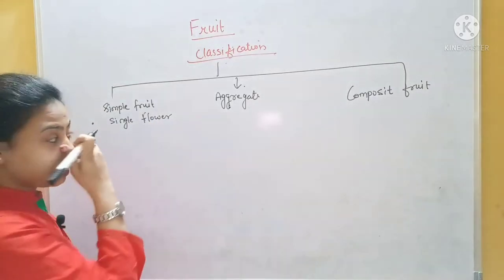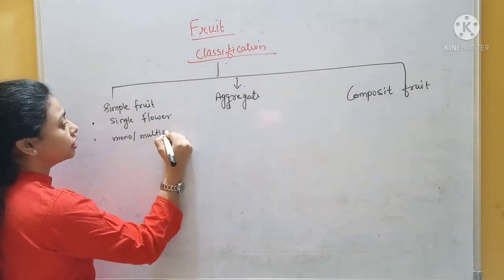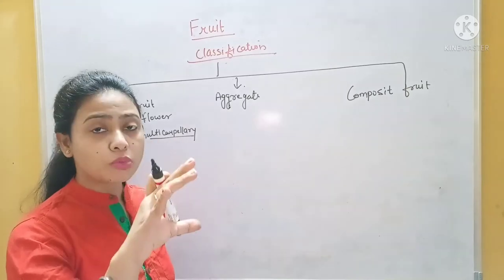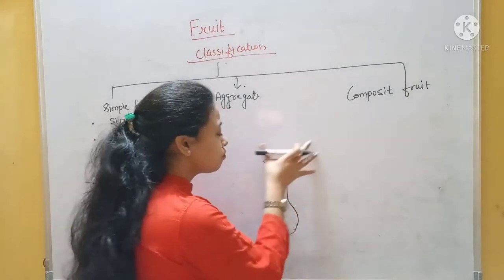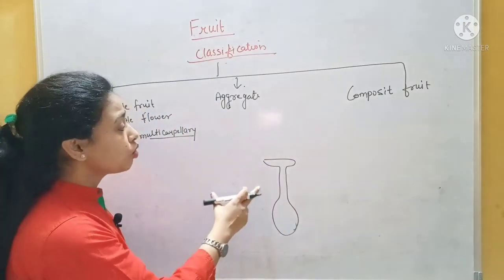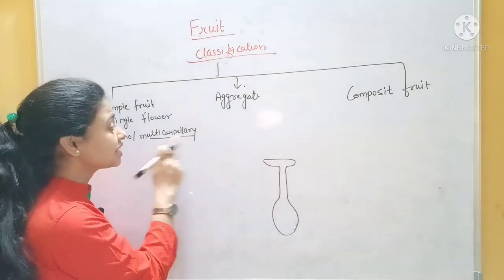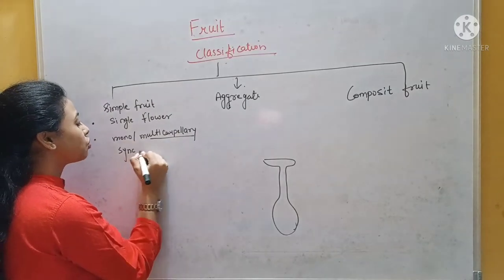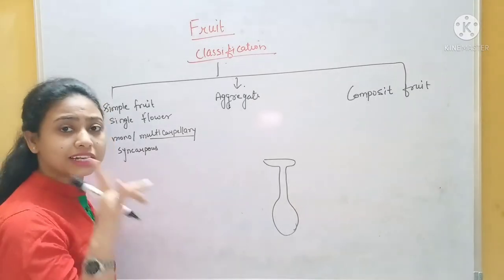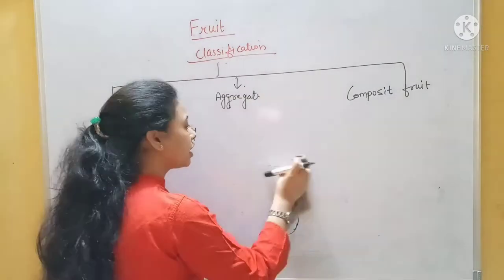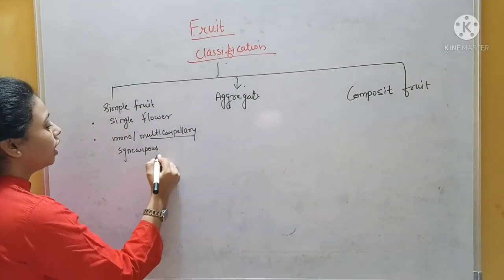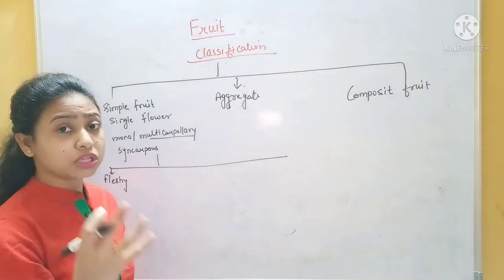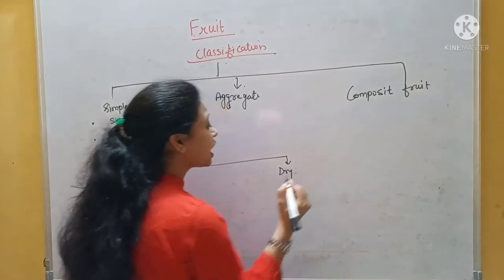The ovary in simple fruit may be monocarpellary or multicarpellary. Do you know the meaning of carpellary? It's called carpel — the whole female part. So this carpel can be one or many. But if it is multicarpellary, in the case of simple fruit it will be syncarpous, which means all carpels are fused, so ultimately it forms one fruit. Now this is further divided into two categories: one is called the fleshy fruit, which means the edible part is very fleshy and juicy; another one is called the dry fruit, which is dry.